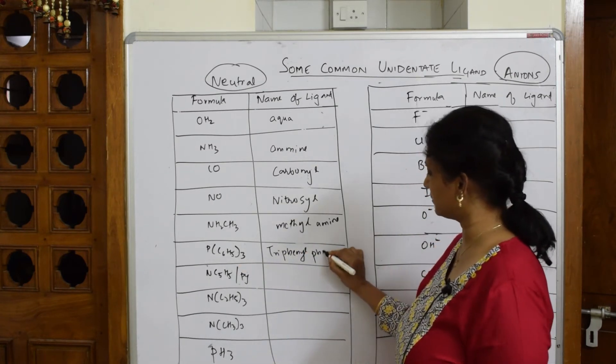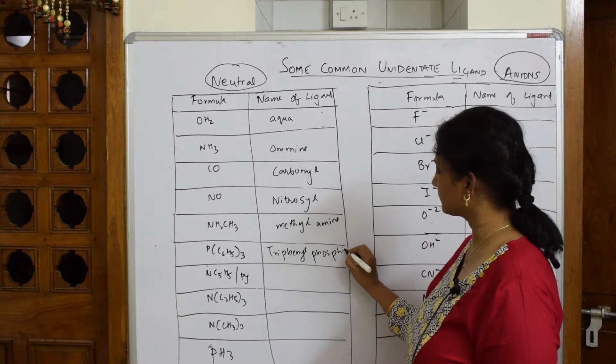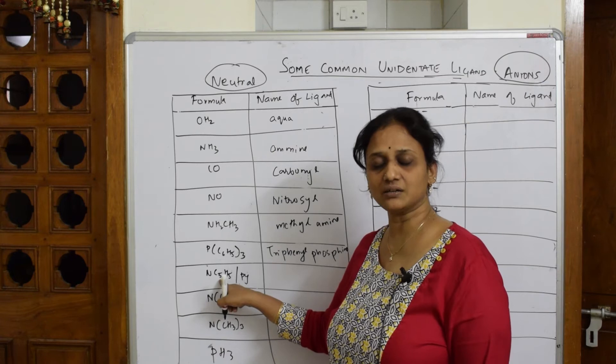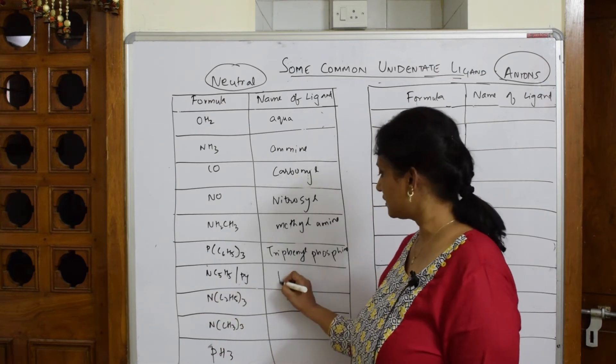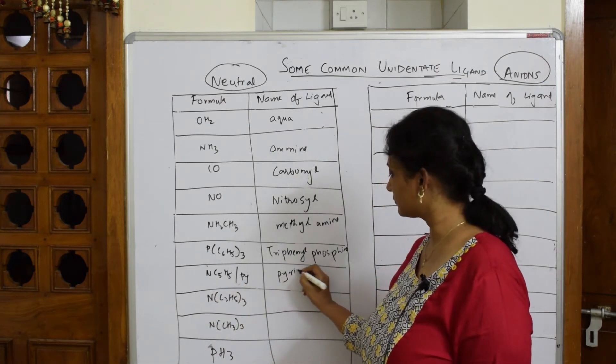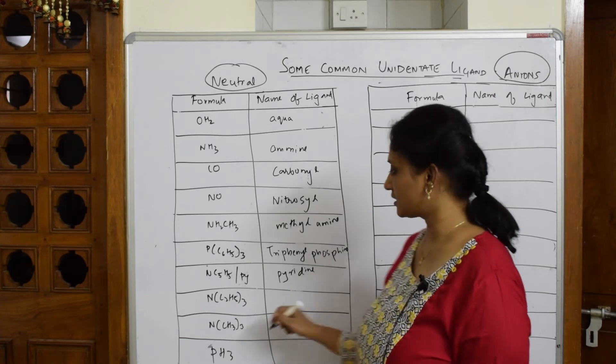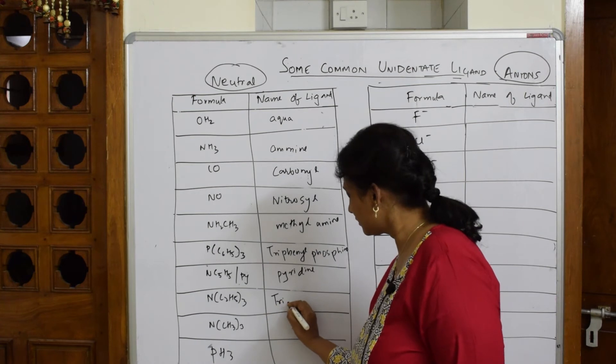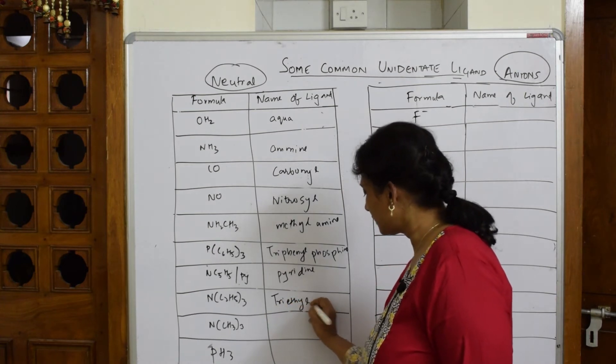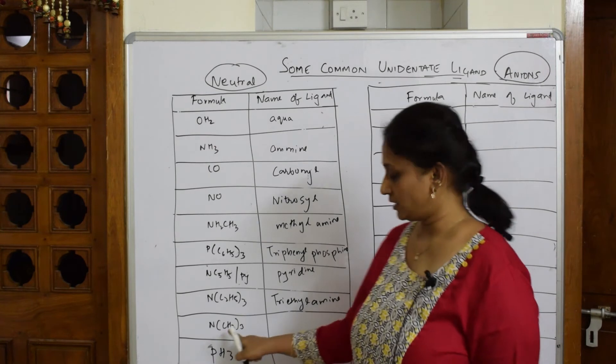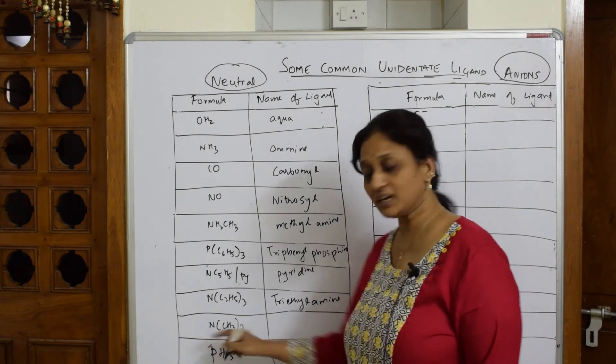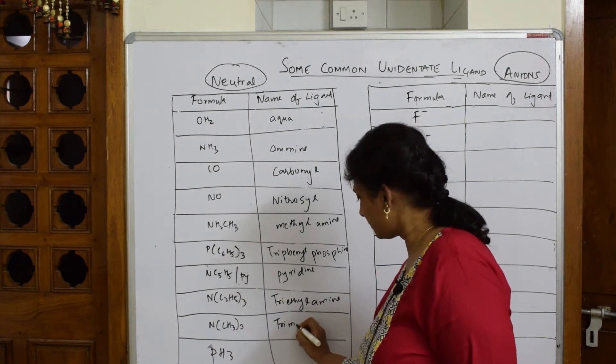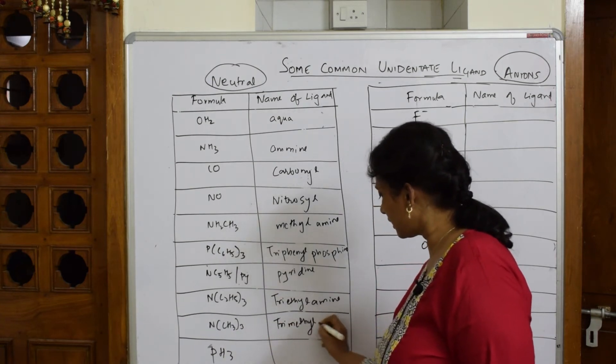Now this is nothing but pyridine. C5H5N is pyridine. Next, this is triethyl amine. This is trimethyl amine—derivative of ammonia, then amine, trimethyl amine.